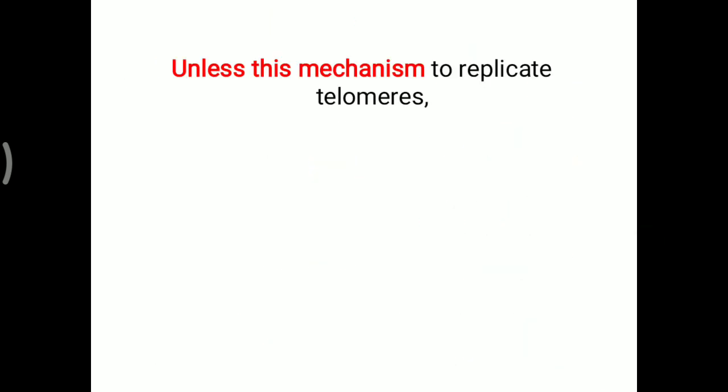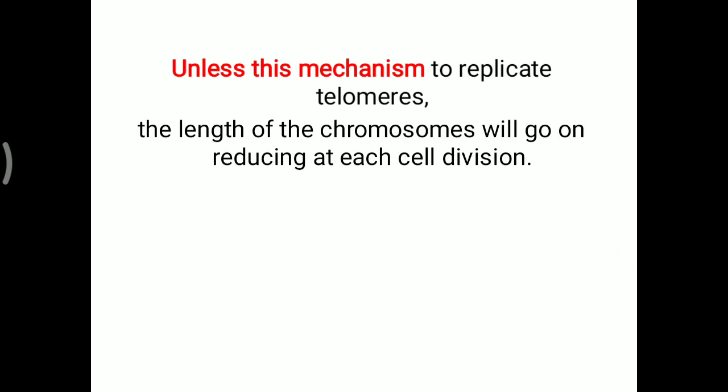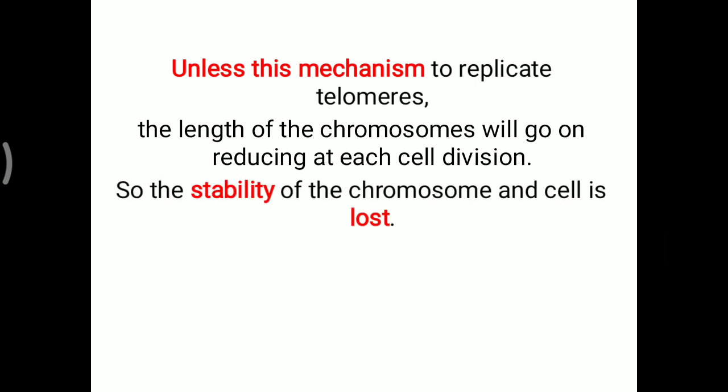Unless this mechanism to replicate telomeres — the end portion of the parent strand — is in place, the length of the chromosome will keep reducing at each cell division. If telomerase enzyme is not present, the end portion of the parent strand will not be replicated and will not be available in the next daughter cell. Every time, chromosome size will be reduced, so the stability of the chromosome and cell will be lost. Basically, for providing stability, the replication of the end portion by telomerase is needed.